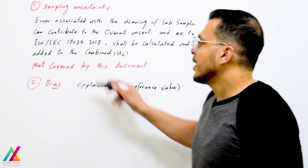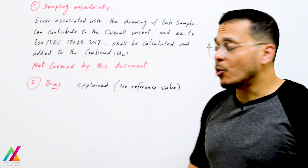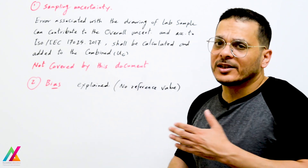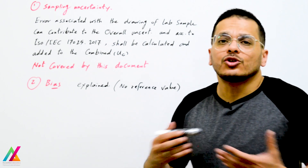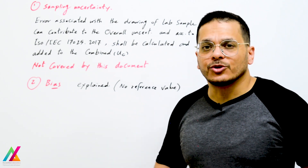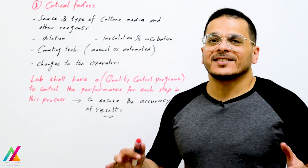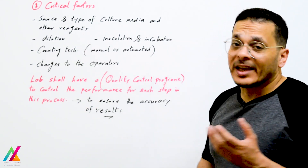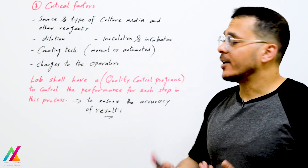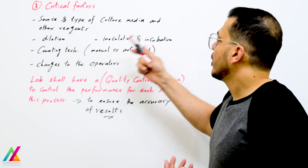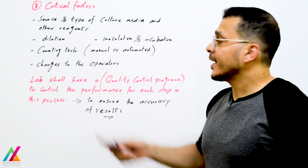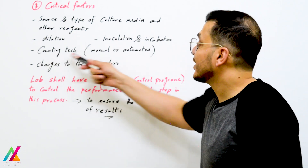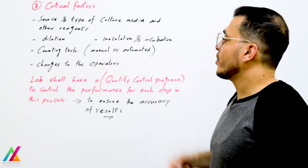Second, bias: it is not included and cannot be covered in this document, and also in other documents, because usually there is no reference value in microbiological measurements. There are also many critical factors during the whole measurement process: source and type of culture media and other reagents, serial dilutions, initial suspension, inoculation, incubation, counting techniques — manual or automated — or detection of growth in the most probable number technique.